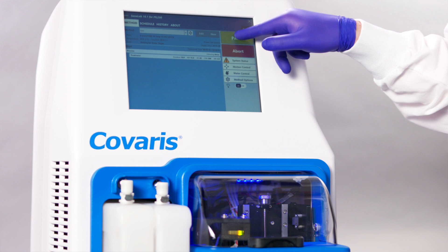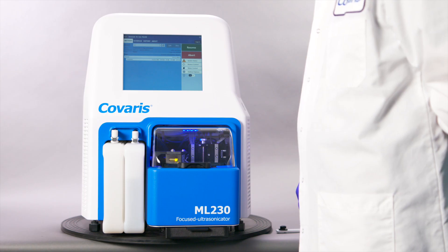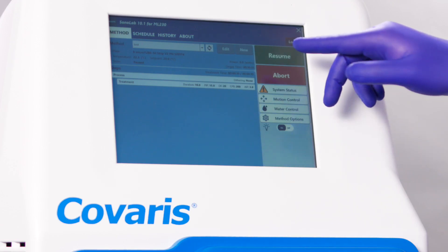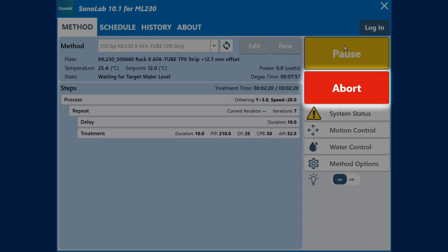The user can touch Pause to pause a running method at any time during the run. If a method has been paused, the user may continue the process by touching the Resume button or terminate the process by touching the Abort button.